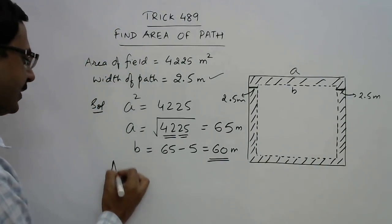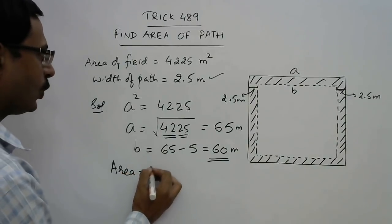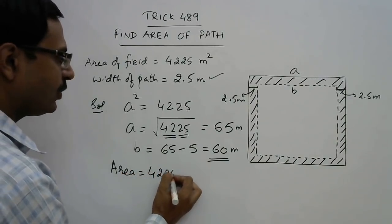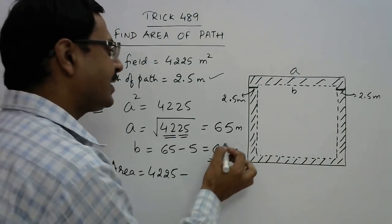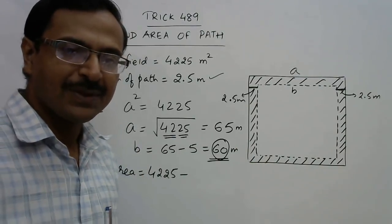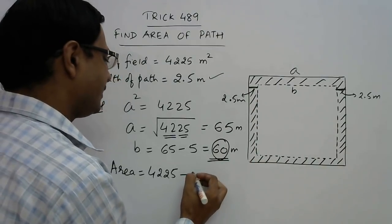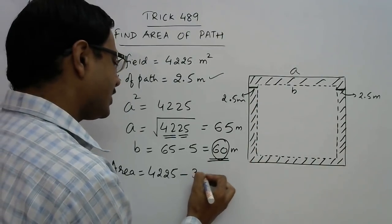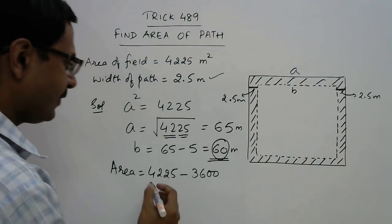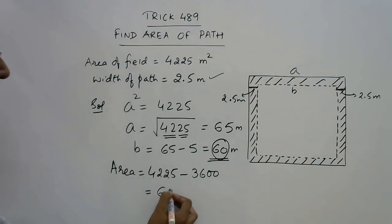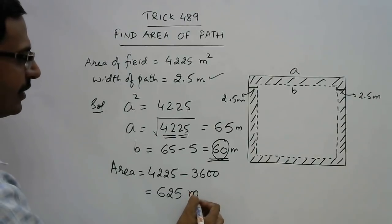Now the area of path is outer area, which is already given. You do not need to square this again. 4225, and what is the inner area? Inner side is 60, so 60 into 60 is 3600. And here we have the answer. The answer for the question is 625 square meters.